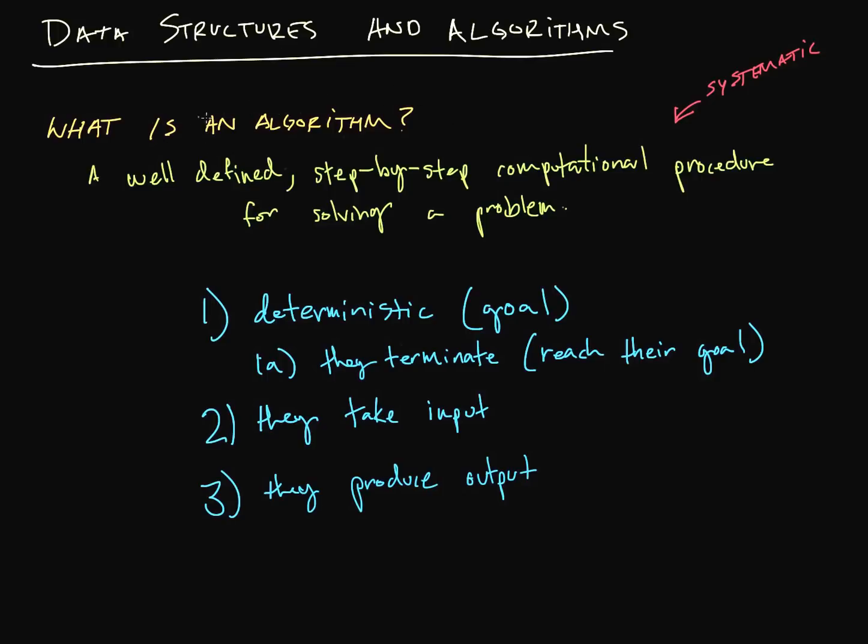So what is an algorithm? Well, an algorithm is a well-defined step-by-step computational procedure for solving some sort of a problem. What does this mean? This means that we have a set of steps, right? Step-by-step, a set of steps to solve this thing.